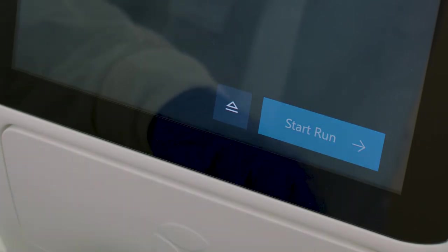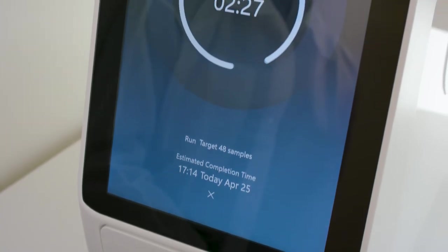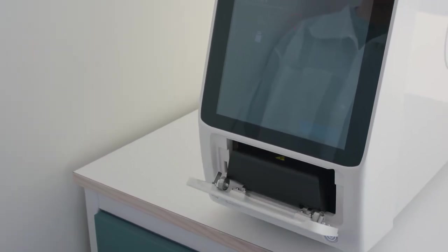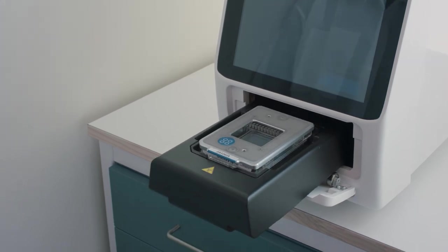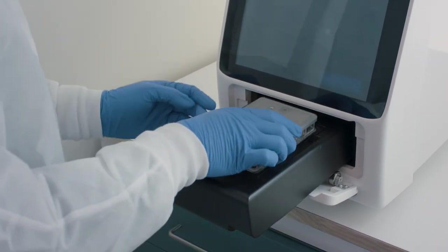Tap Start Run. The run begins and the screen displays the time remaining. Tap Finish when the run is completed. Now you can analyze the exported data using the NPX Signature software.